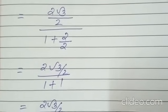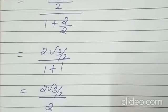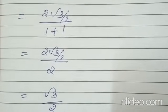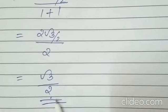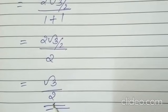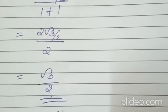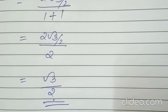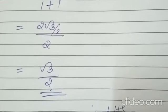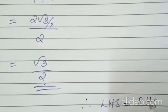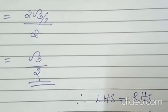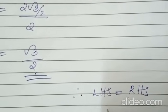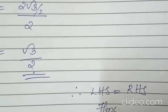The 2s cancel, giving a final result of root 3 by 2. This equals the RHS which is also root 3 by 2. So LHS equals RHS — we have proved it. Therefore, LHS equals RHS, hence proved.